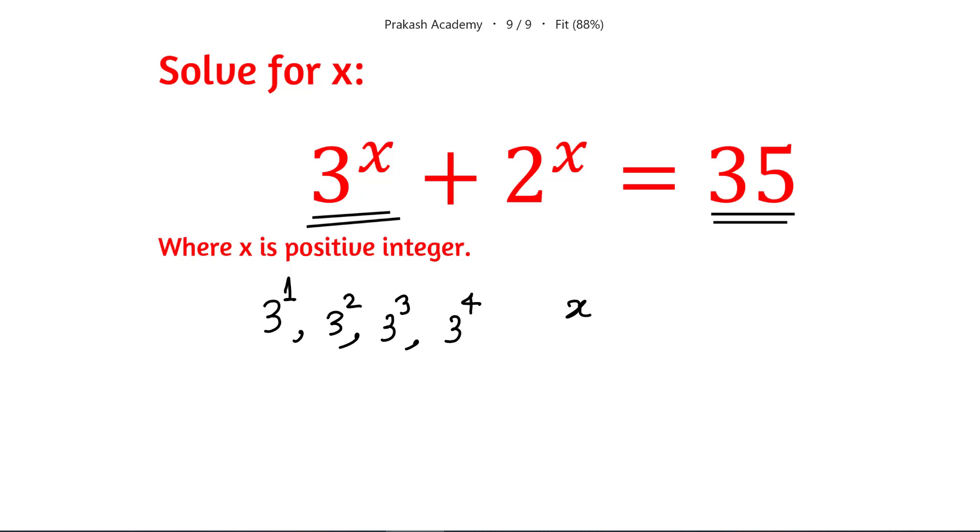If X is 4, in that case 3 raised to the power 4 is 81, so this term will be 81. Forget about this term. But this side we have only 35, so X cannot be 4 or X cannot be greater than 4, so X has to be less than 4. One conclusion that I have is that for this expression X is less than 4.